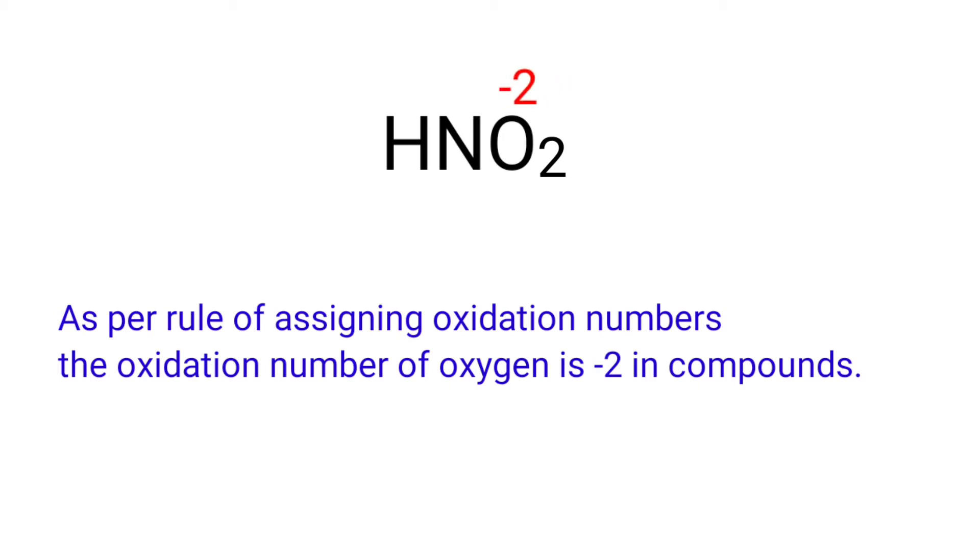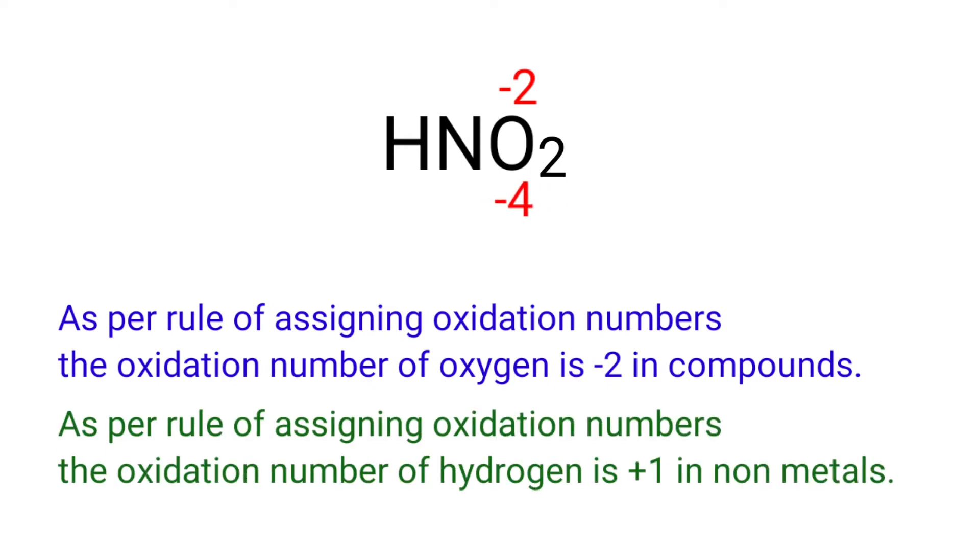We can write the oxidation number of the element above its symbol and the total oxidation number of the atoms below its symbol. As per the rule of assigning oxidation numbers, the oxidation number of hydrogen is +1 in non-metals.